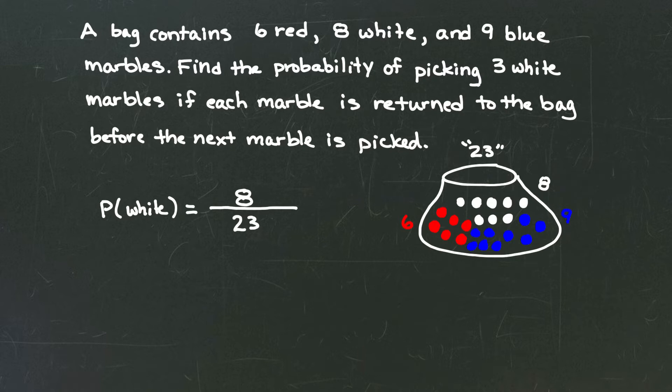This means the probability of selecting one white marble out of that bag is 8 over 23. But the question doesn't ask us to just pick one white marble. It says find the probability of picking three white marbles.